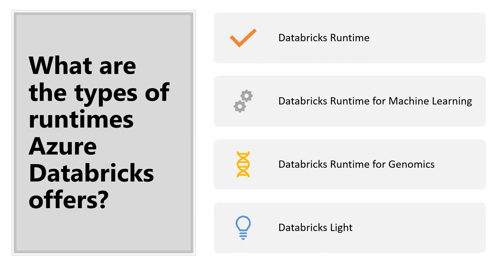What is Databricks Runtime for Genomics? Databricks Runtime for Genomics is a version of Databricks Runtime optimized for working with genomic and biomedical data. What is Databricks Lite? Databricks Lite is the Azure Databricks packaging of the open-source Apache Spark Runtime. It provides a runtime option for jobs that don't need the advanced performance, reliability, or auto-scaling benefits provided by Databricks Runtime.